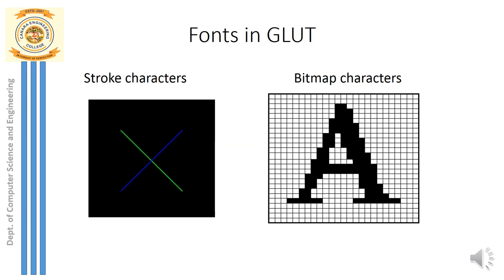We will see what OpenGL functions are required to display these types of characters. We have two types of characters in OpenGL: stroke characters and bitmap characters. Stroke characters are smooth — for example, the letter X is displayed by simply taking two lines, using basic geometric primitives.